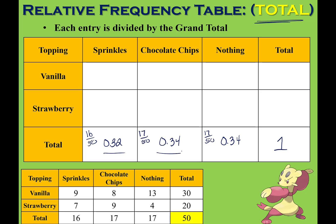If you add those three together, that gives me 100%, which makes sense. How many people liked vanilla and sprinkles? That was 9 out of the total of 50, because we're basing our percents off of how many people there were altogether. So we get 0.18.